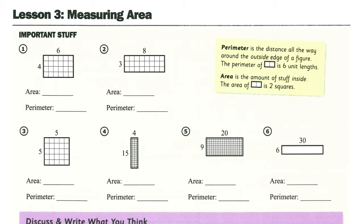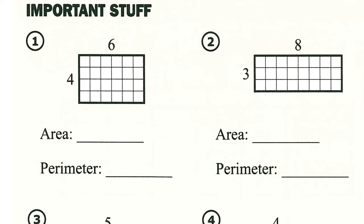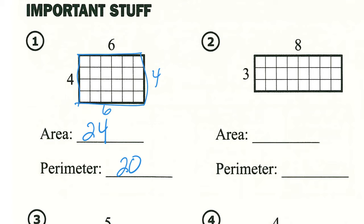In lesson three, we're going to start looking at area really closely. Area is the amount of flat space that a shape is taking up. To find out how many squares there would be, we'd be finding the area. So I'm going to take four times six — my length times my width — to find my area. Four times six would be 24. The perimeter is the distance all the way around, so this side would also be four, this side's also six, and if I add all of those up, my perimeter there would be 20. In number two, my area would be three times eight, that would be 24. My perimeter, the distance all the way around, is going to be 22. So this one's interesting in that they both have the same area, but they do have different perimeters.